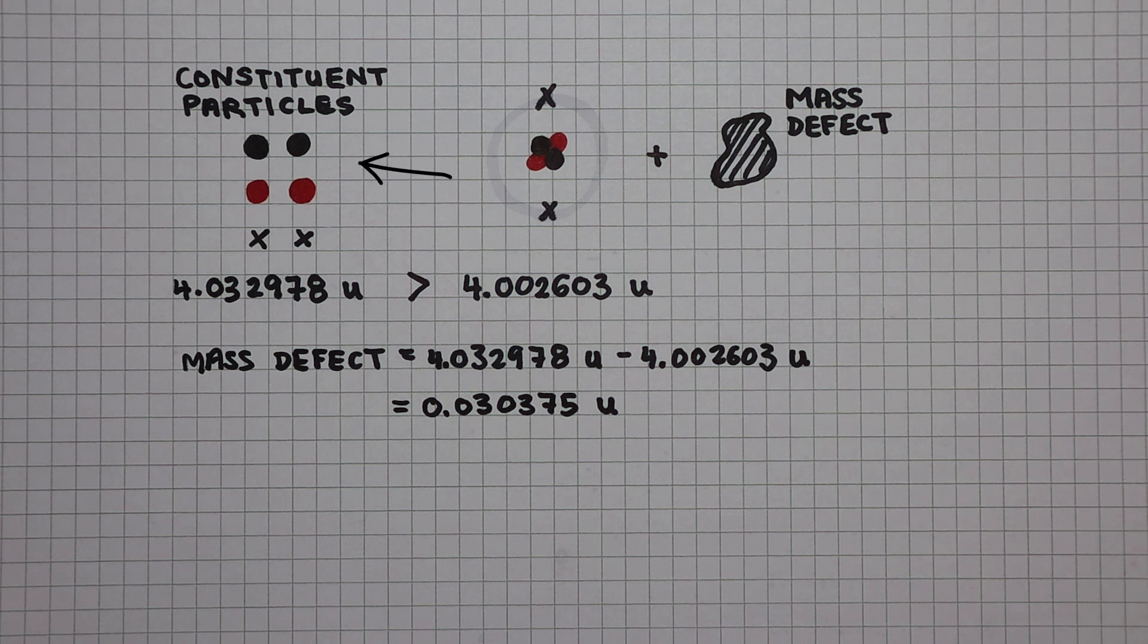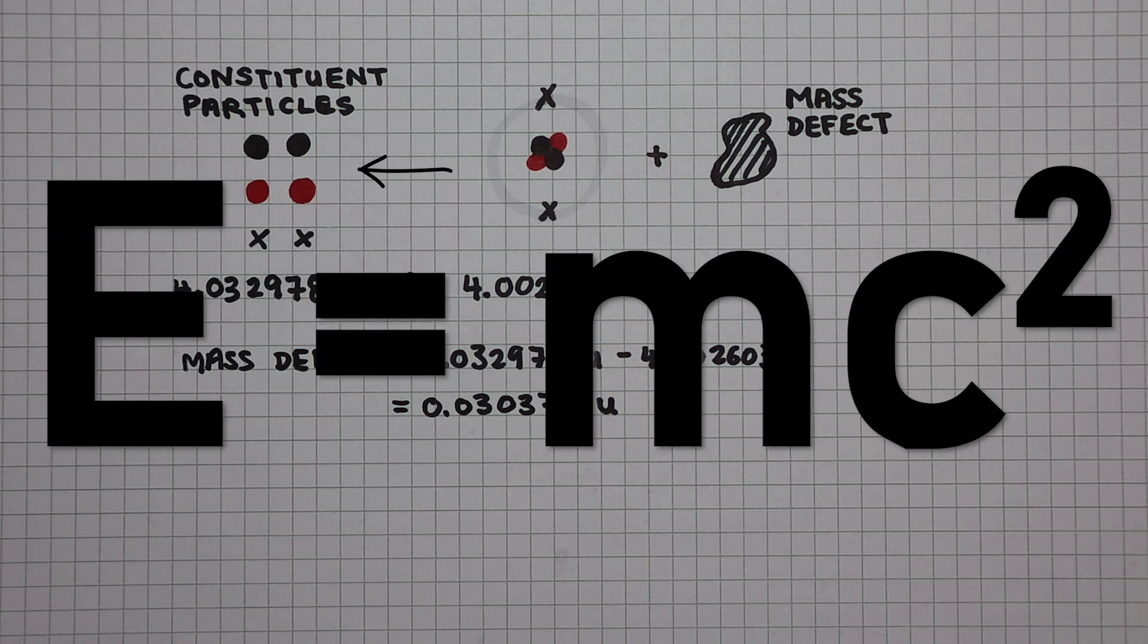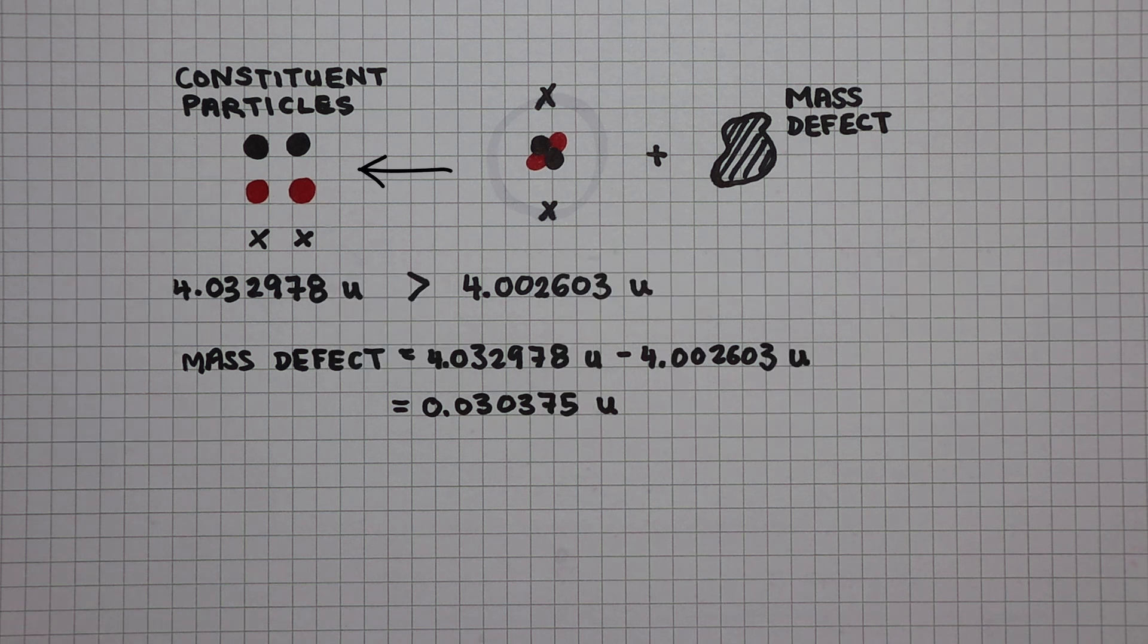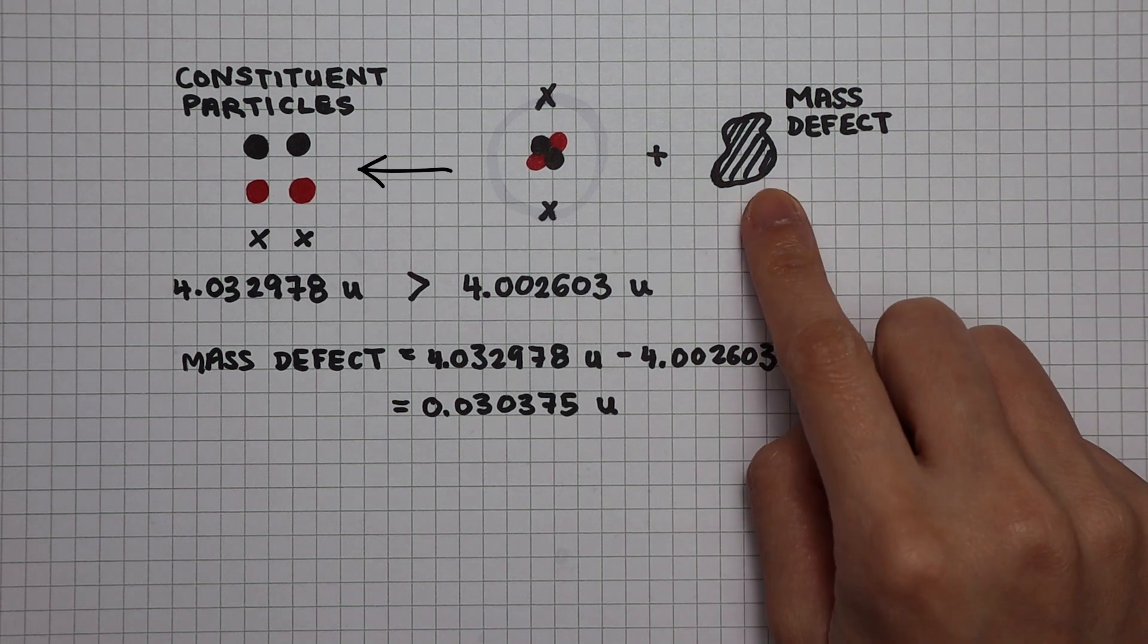It'll make a lot more sense if we turn this arrow around and remind ourselves of Einstein's equation E equals mc squared, which permits mass to energy conversion. Let's make this conversion here and think of the mass defect as energy.